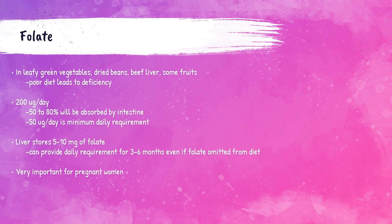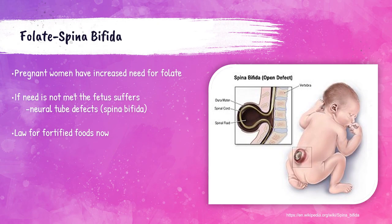Folate is considered a prenatal vitamin, meaning it's very important in pregnancy. Folate is absolutely essential in pregnancy, as a lack of it can cause severe birth defects like spina bifida, where the spine and spinal cord do not properly form in utero. Spina bifida is not a megaloblastic anemia — it's a neural tube defect caused by folate deficiency in pregnancy.